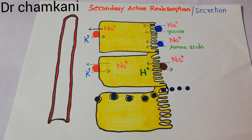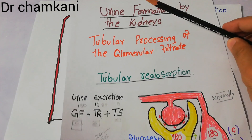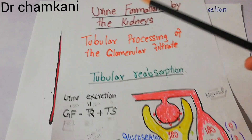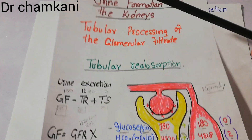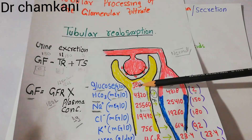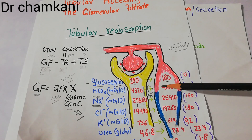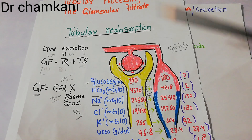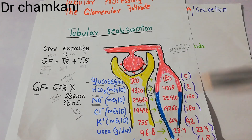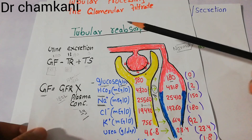To properly understand this, remember we are talking about urine formation by the kidneys. We discussed filtration in detail as the first step of urine formation. Inside the nephrons, blood undergoes filtration; the filtrate enters the proximal tubules, where several substances are reabsorbed into the blood and those not needed — like creatinine and urea — are excreted.